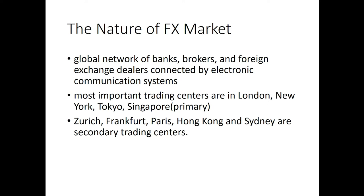London is primary because 37% of the foreign exchange market activity is done there. New York has only 18% of the activity, while Zurich, Tokyo, and Singapore have 5% to 6% each. London's dominance is due to its history and geography — it was the capital of the world's first major industrial trading nation and the world's largest international banking center by the end of the 19th century.